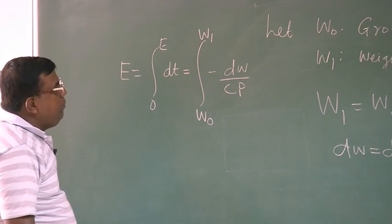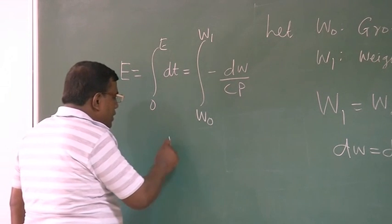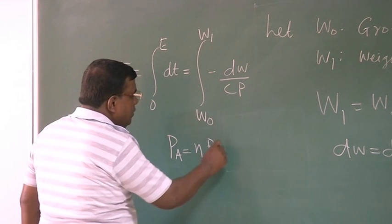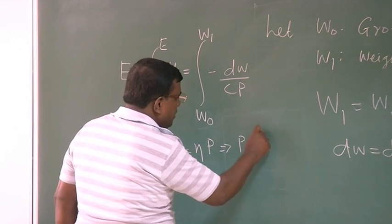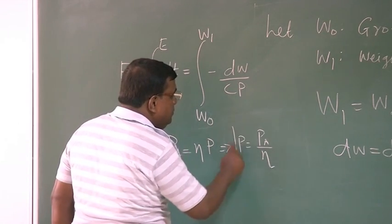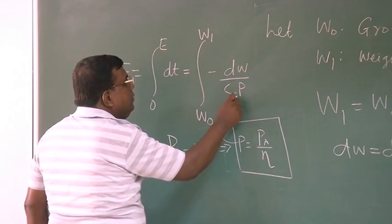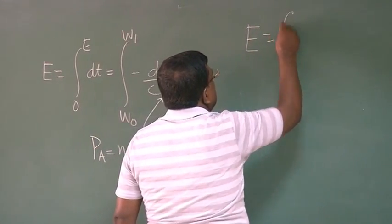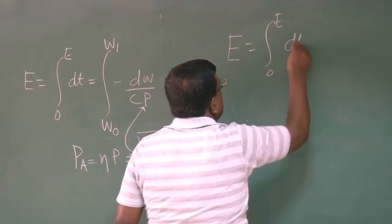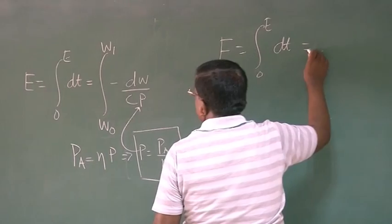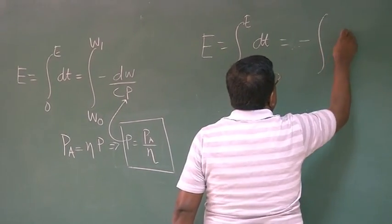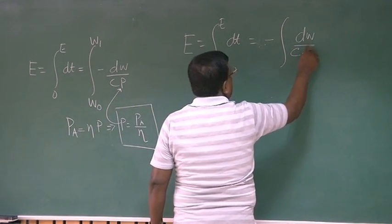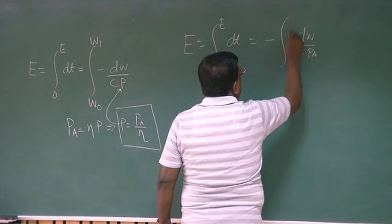We know that P is the power available at the brake, but power available for the airplane is η into P. So I can write P is equal to P available by η. This P I will be using here. So now my expression for E becomes minus dW by C into power available, and the η goes on top.